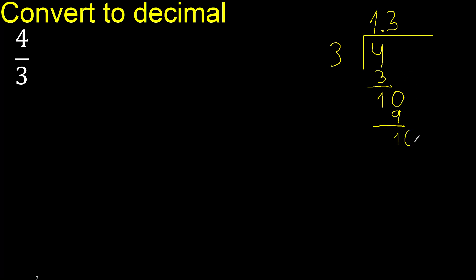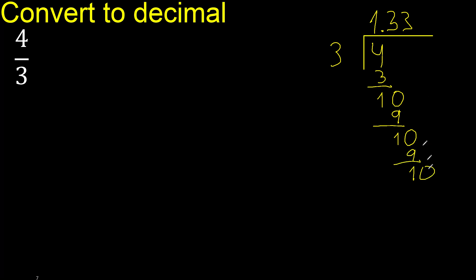Always complete with 0 after the decimal point here. 0 point 10. 3 multiplied by 3 is 9. Subtract — complete. 10. 3 multiplied by 3 is 9. Subtract — complete. Remainder 1 again.